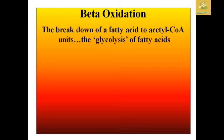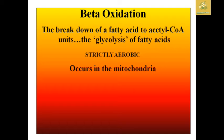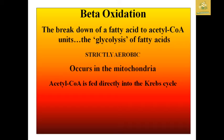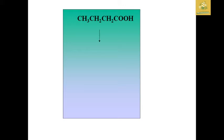After phospholipase reactions, we move to beta oxidation. Beta oxidation is the breakdown of fatty acids to acetyl-CoA — we can also term it as glycolysis of fatty acids. It is strictly aerobic in nature and occurs mainly in the mitochondria. Acetyl-CoA is directly fed into the Krebs cycle, completing the process analogous to what glucose does in glycolysis. Fatty acids are combined with AMP in the presence of ATP, where a high-energy phosphate is released.